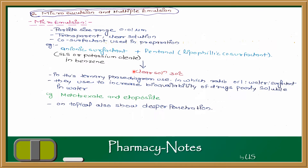First we discuss Micro Emulsion and Multiple Emulsion. If we talk about Micro Emulsion, it's called Micro because its particle size is 0.001 micrometer. It's such a small particle, so when we create the system, it will also be transparent in a clear solution. We talked about types of emulsion and distribution according to globule size — Micro Emulsion has a very small particle size, so it forms transparent and clear solutions.